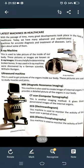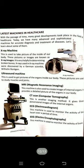The first one is the X-ray machine. Have you seen an X-ray machine? It is used to take pictures of the inside of our body. These images are known as X-rays. It is helpful for diagnosing broken bones and other conditions. The X-ray machine was discovered by German scientist Wilhelm Röntgen.